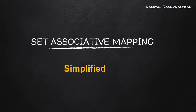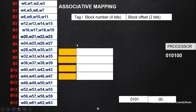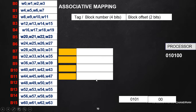Welcome back to this video. We will discuss the third method of cache mapping, which is set associative mapping. Before starting, we can understand the fault associating with the second method of cache mapping. In associative mapping, we can map any main memory block to anywhere inside the cache memory, to any cache lines. This is the working principle of associative mapping.